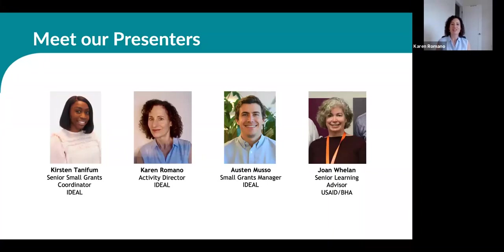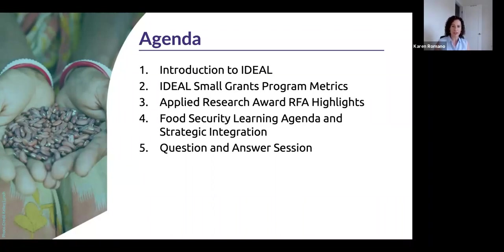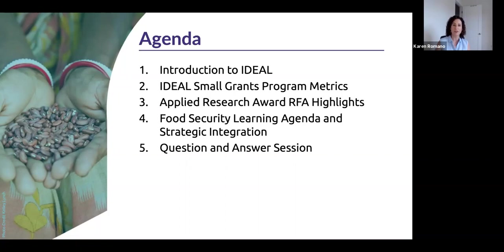Thanks so much, Kirsten. Welcome again, everybody, and thank you so much for joining us today. We're really excited to launch Ideal's first Applied Research Award RFA on this important theme of strategic integration within food security programming. We designed the Applied Research Award in response to a need expressed by food security implementers for more user-friendly research that's practical and program-oriented. This award will provide a great opportunity for researchers and implementers to team up on practical research that can make a real difference in food security programming.